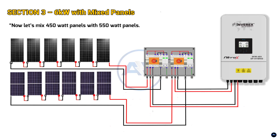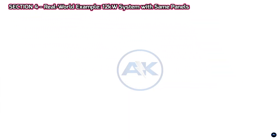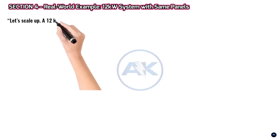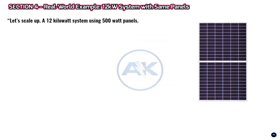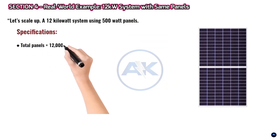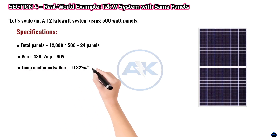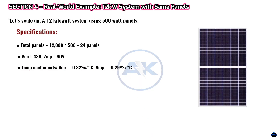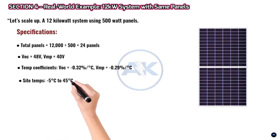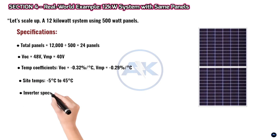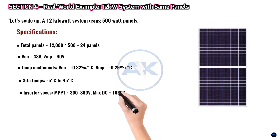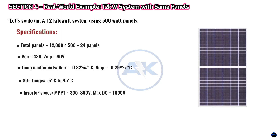Section 4 — Real-world example: 12 kilowatt solar power system string sizing with same-wattage panels. Let's scale up to a 12 kilowatt system using 500-watt panels. Specifications: total panels = 12,000 ÷ 500 = 24 panels. VOC = 48 V, VMP = 40 V. Temp coefficients: VOC = −0.32%/°C, VMP = −0.29%/°C. Site temps: −5°C to 45°C. Inverter specs: MPPT = 300–800 V, max DC = 1000 V.